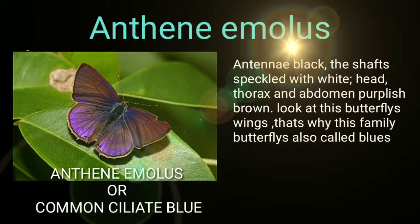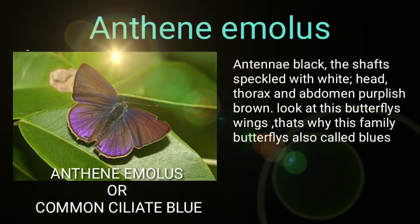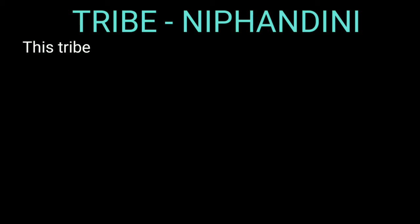Anthene Black. The shaft speckled with white, head, thorax and abdomen purplish-brown. Look at this butterfly's wings. That's why this family's butterflies also have blue coloration.